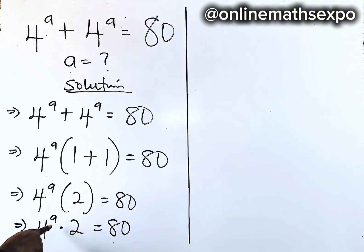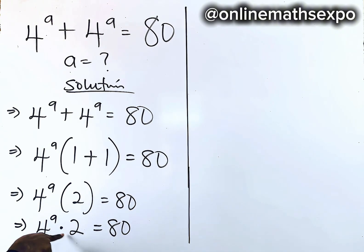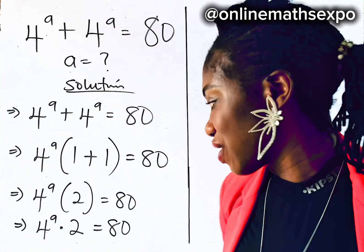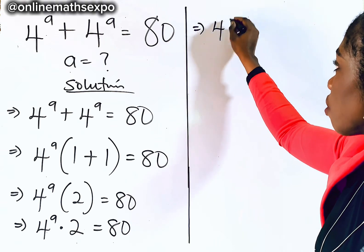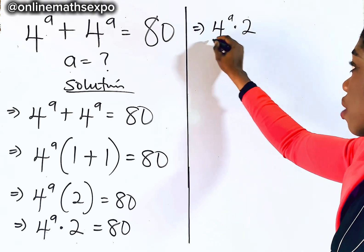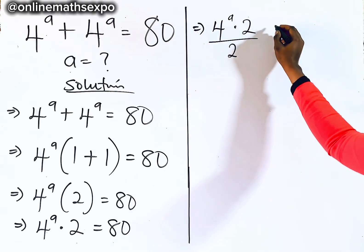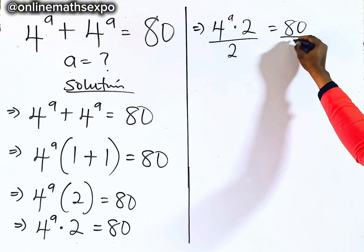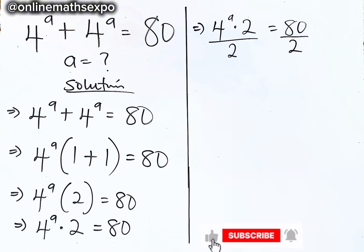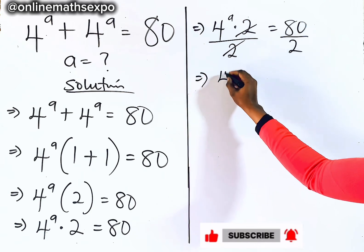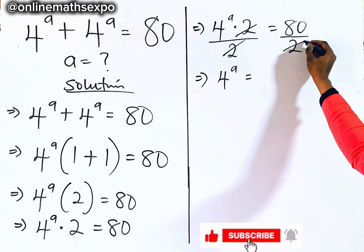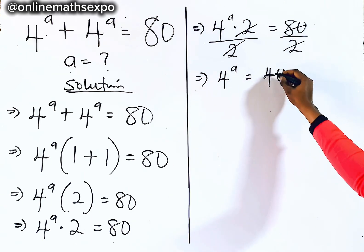Now what do you do? Our target is 8. We need to remove this 2, and because it's multiplying, to remove it we divide. So we divide both sides by 2: 4 to the power of 8 multiplied by 2, divided by 2, equals 80 divided by 2. This cancels out, leaving 4 to the power of 8 equal to 40.